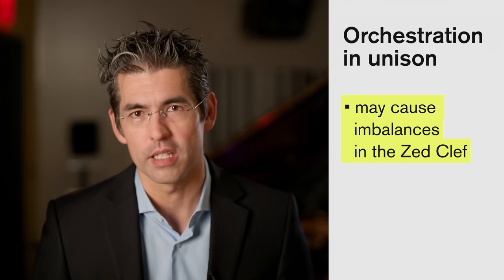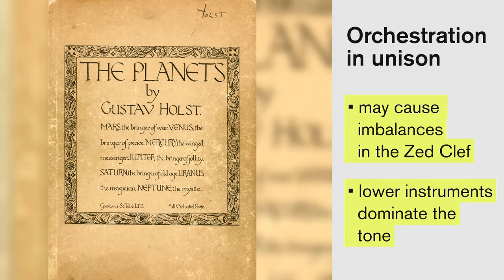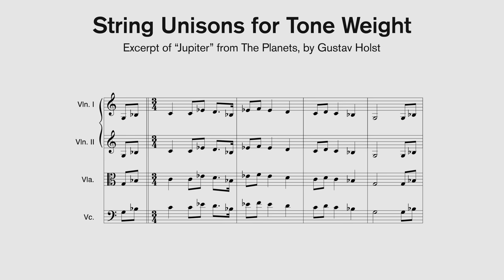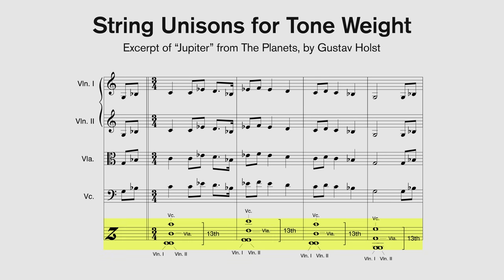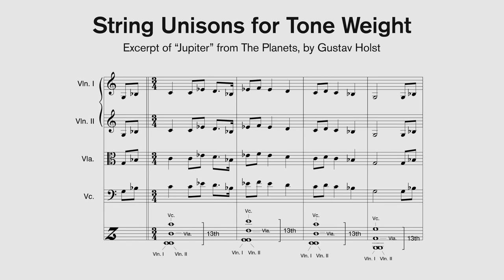Let's discuss string unisons now. When you want more tone weight on a line, orchestrating the strings in unison is a great choice. However, it causes imbalances within the Z-clef, and the lower instruments, such as the cellos, tend to dominate the tone color. An example of this is Gustav Holst's Jupiter from his iconic Suite, The Planets. Each downbeat of each measure has been transferred to the Z-clef. Notice the spread of an octave plus a sixth from the highest note to the lowest — the cellos tend to dominate because they are playing so much higher than the violins in their respective ranges. Holst doubles the string melody with horns at the unison, further coloring the tone, and notice how much thicker the timbral quality is compared to the E.T. example.